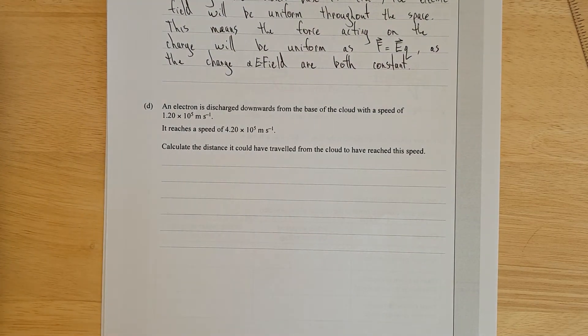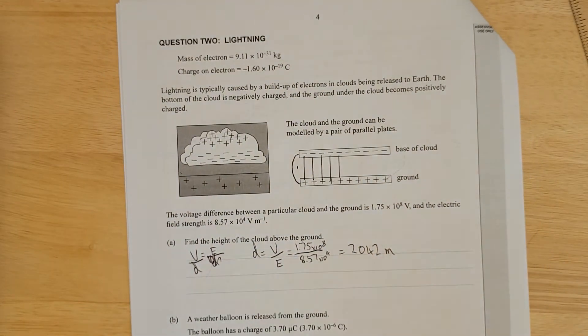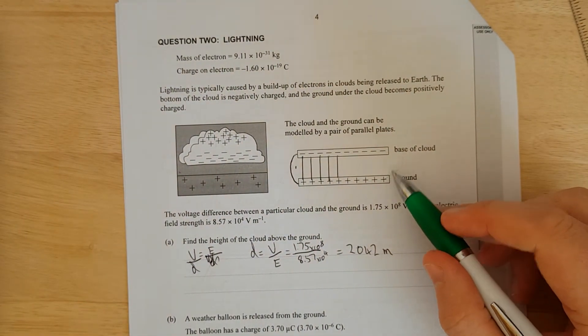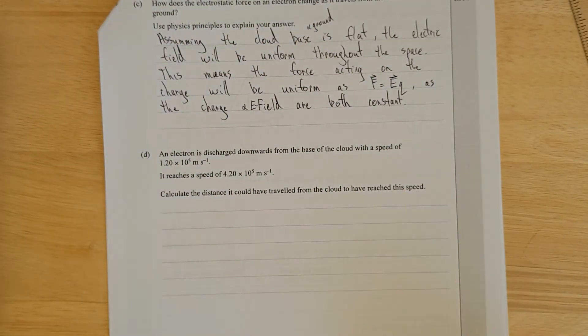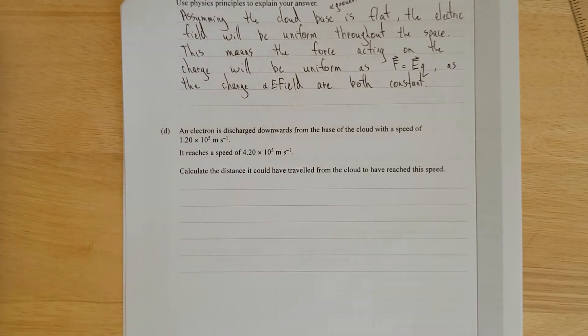Right, next question. The electron, or an electron, is discharged downwards from the base of the cloud at the speed of 1.2 times 10 to the 5, so like 120,000 meters per second. It reaches a speed of 4.2 meters per second. Calculate the distance it could have travelled from the cloud to have reached this speed. We just need to double check. The ground is positive, so the electron is going to be attracted towards the ground.